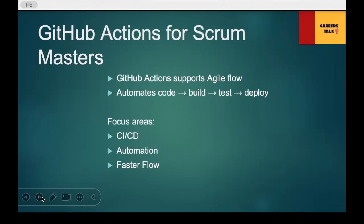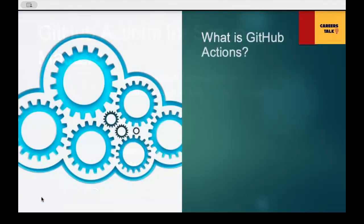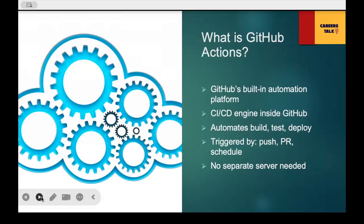Let's start by understanding what GitHub Actions actually is. It is GitHub's own built-in automation platform — GitHub's robust CI/CD, continuous integration and continuous delivery platform. It's the engine that runs your team's automation. That means whenever developers push code, create a pull request, or schedule a job, GitHub Actions can automatically build, test, and deploy the application. In simple words, GitHub Actions equals automatic work that developers usually do manually.